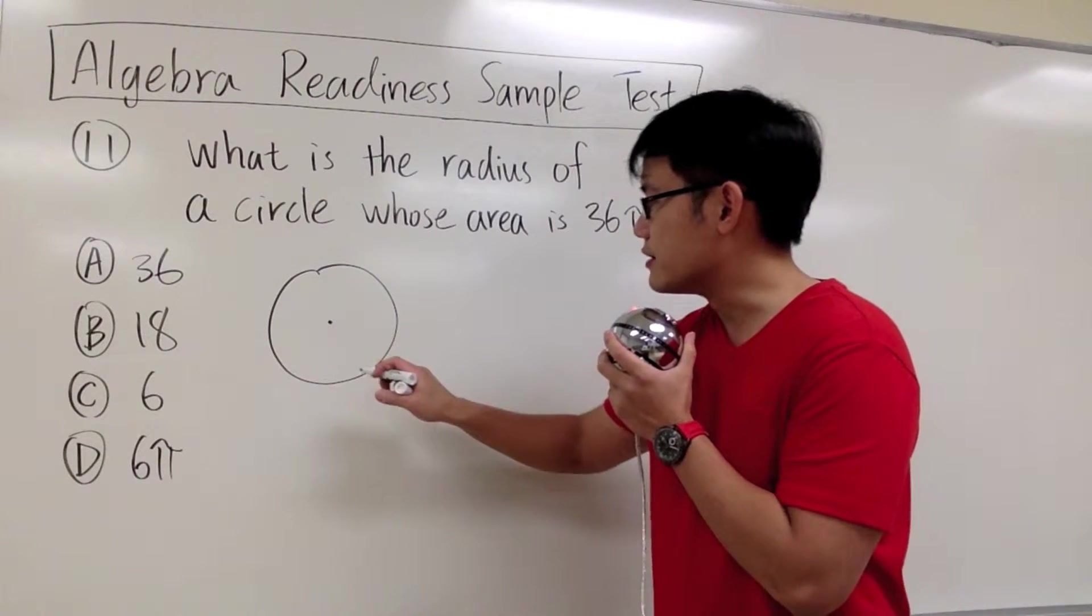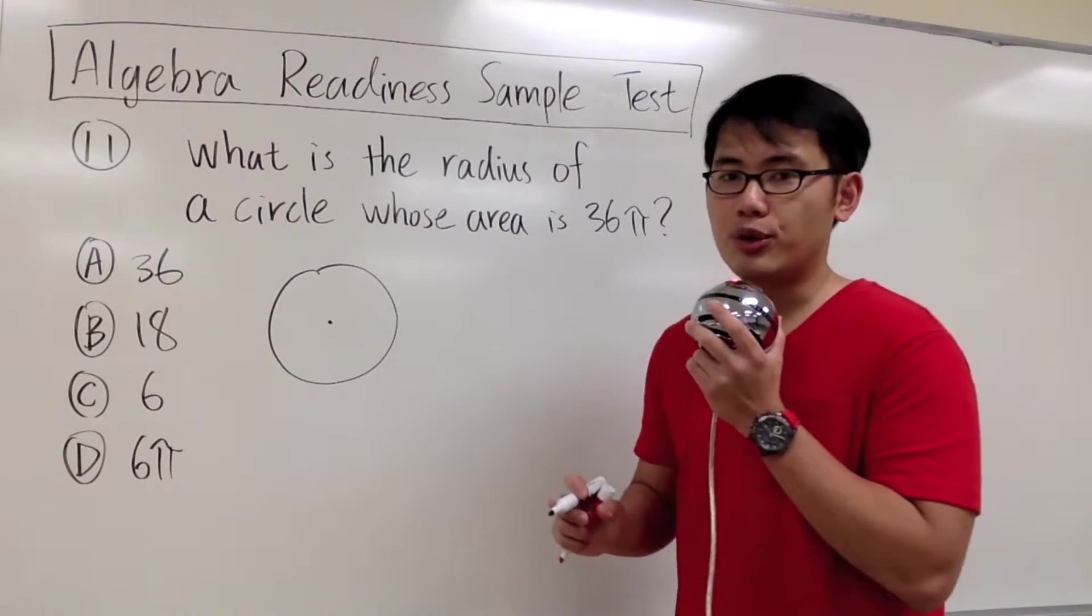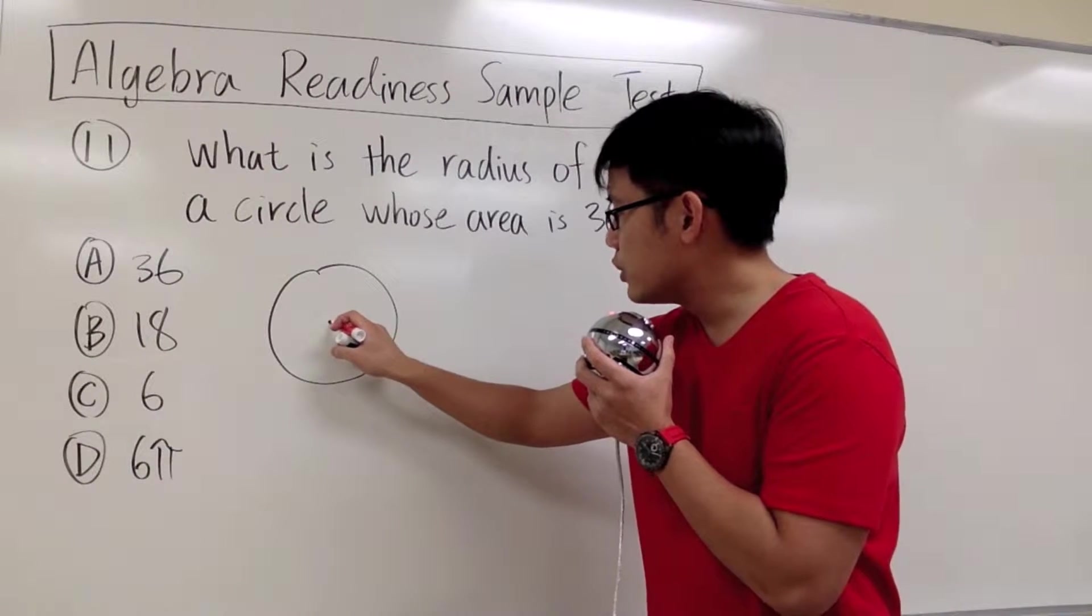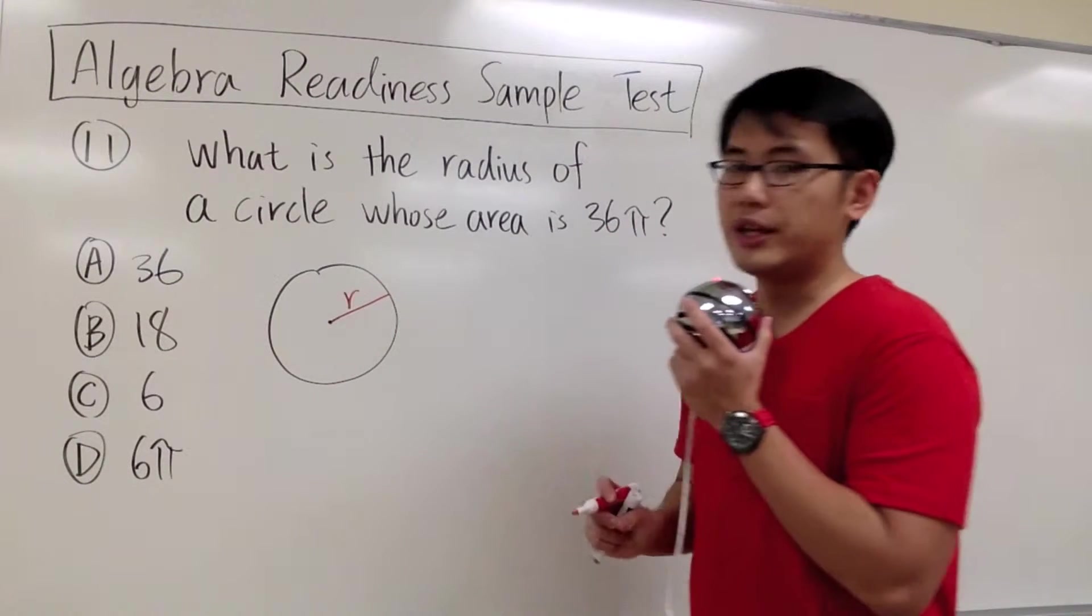What we need is the center of the circle, so we'll just put that in the middle. And from the center to the circle, this right here is the radius.